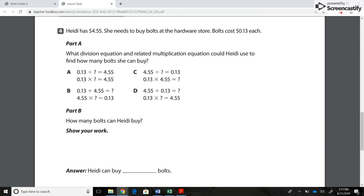A. 0.13 divided by blank equals 4.55, 0.13 times blank equals 4.55. B. 0.13 divided by 4.55 equals blank, 4.55 times blank equals 0.13. C. 4.55 divided by blank equals 0.13, 0.13 times 4.55 equals blank. D. 4.55 divided by 0.13 equals blank, 0.13 times blank equals 4.55.